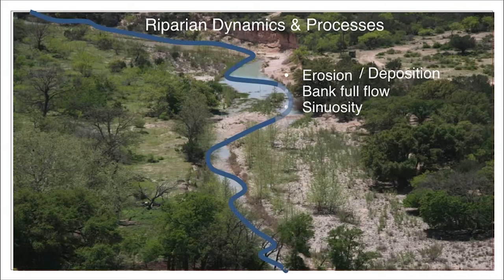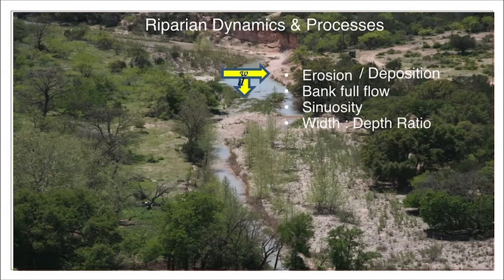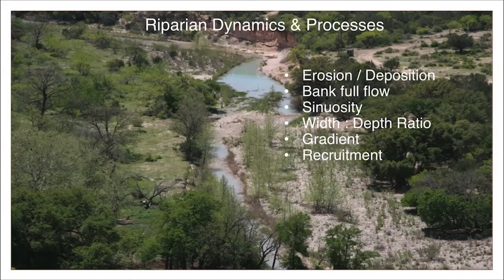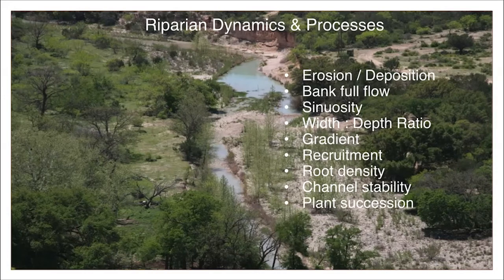Sinuosity is the degree of crookedness or meander in the channel, and is an important factor in flood energy dissipation. The width-to-depth ratio is a way of understanding if the channel is narrow enough to efficiently move sediments, or if it's wider than it should be, which is common in degraded riparian areas. The gradient is the slope or steepness of the channel, influenced most by the channel's length and its sinuosity or meander pattern. Recruitment is the process of gaining new plants. Root density, channel stability, and plant succession are other important concepts which will be discussed further in Lesson 6.